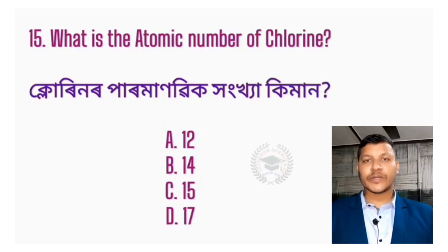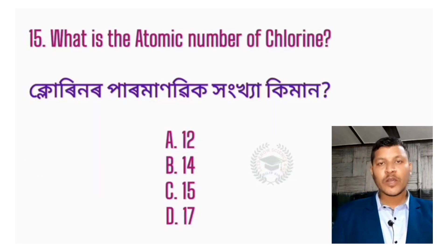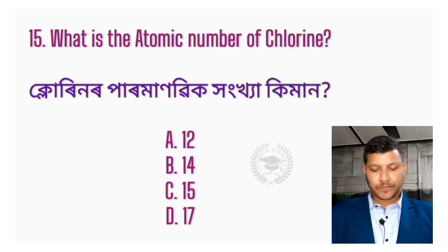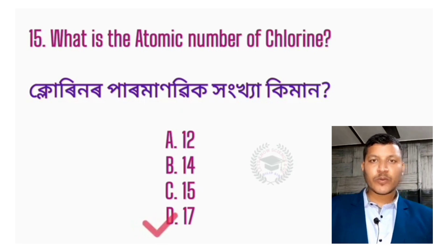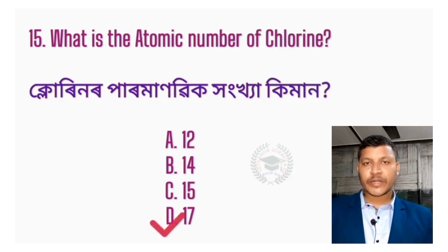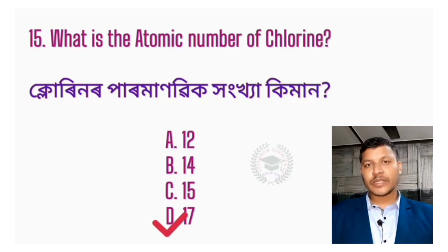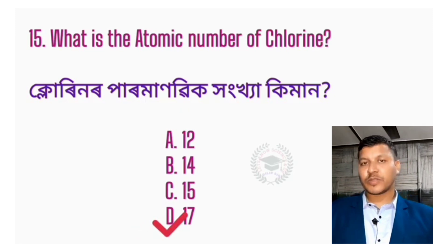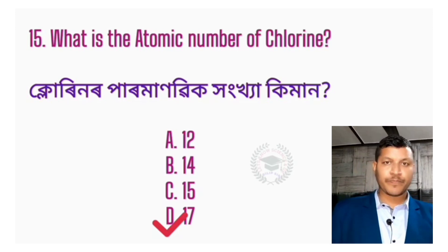Question number 15: What is the atomic number of chlorine? The answer is option D — 17. The atomic number of chlorine is 17.